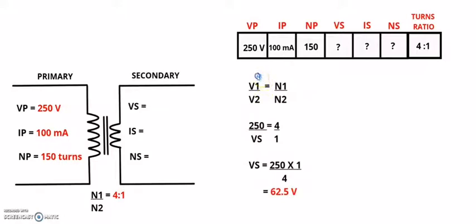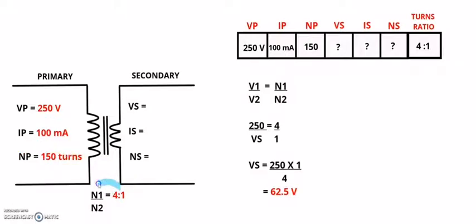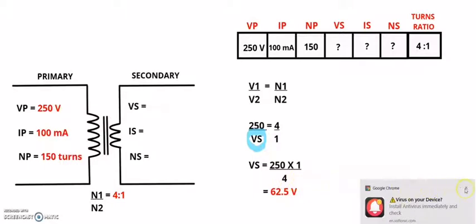The first ratios I'm going to use are the voltage and turns ratio. I have the primary turns and the turns ratio of the transformer, which I can use with the voltage ratio to calculate the secondary voltage: V1 over V2 equals N1 over N2. So 250 over Vs equals 4 over 1, which is the turns ratio. Making Vs the subject gives 250 multiplied by 1 divided by 4, which gives 62.5 volts.